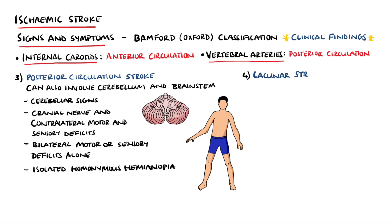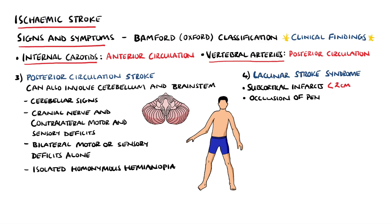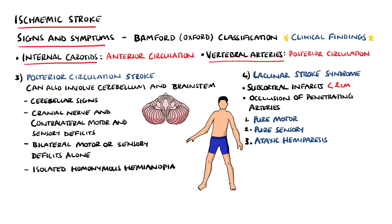The fourth class is lacunar stroke syndrome, where lacunar strokes are small subcortical infarctions usually smaller than 1.5 to 2 centimeters. These occur due to occlusion of the smaller penetrating arteries that provide blood flow to deeper brain structures. Subtypes depending on the structure involved include pure motor stroke, pure sensory stroke, ataxic hemiparesis presenting with cerebellar signs, and dysarthria or clumsy hand syndrome, which presents with slurred speech and difficulty with fine motor movements, particularly of the hand.